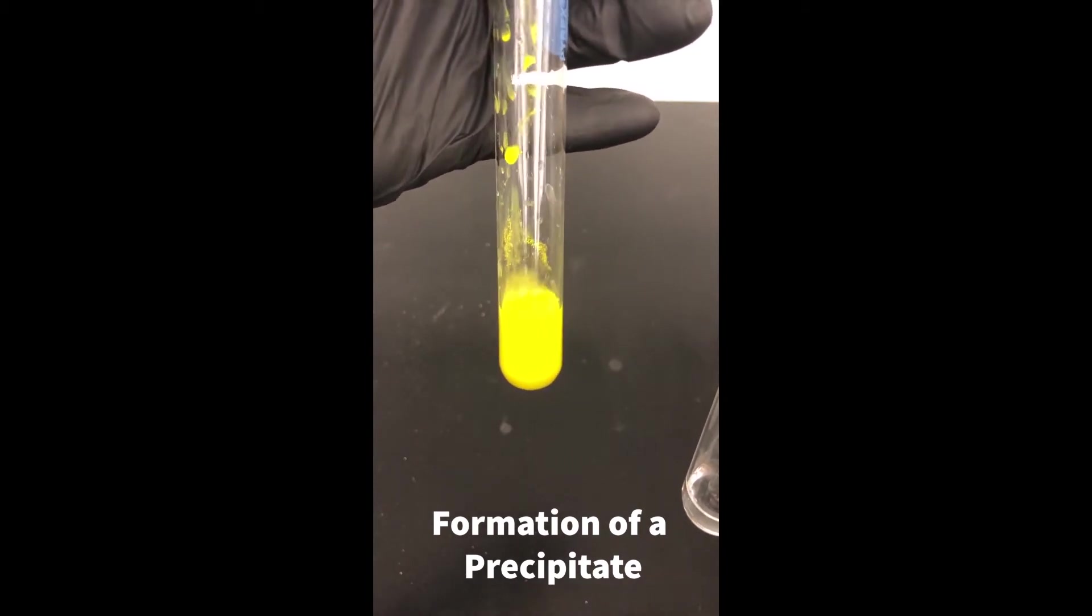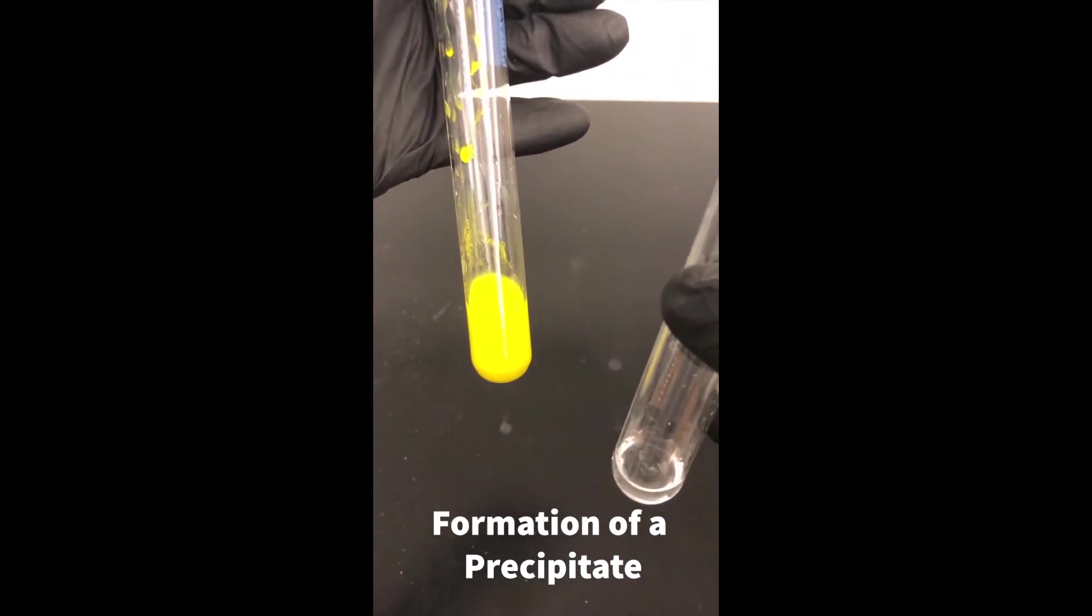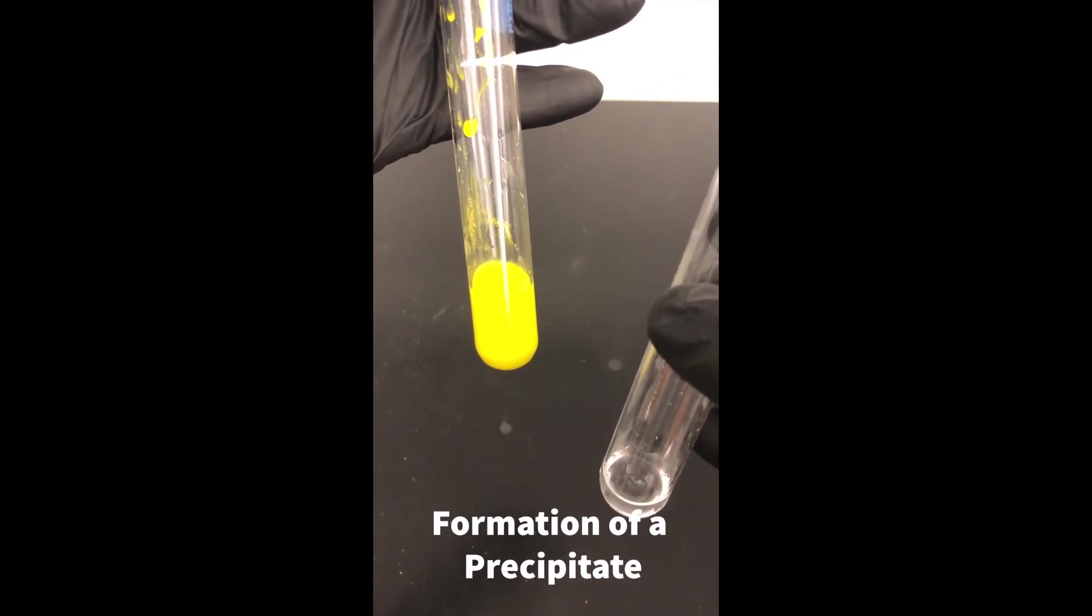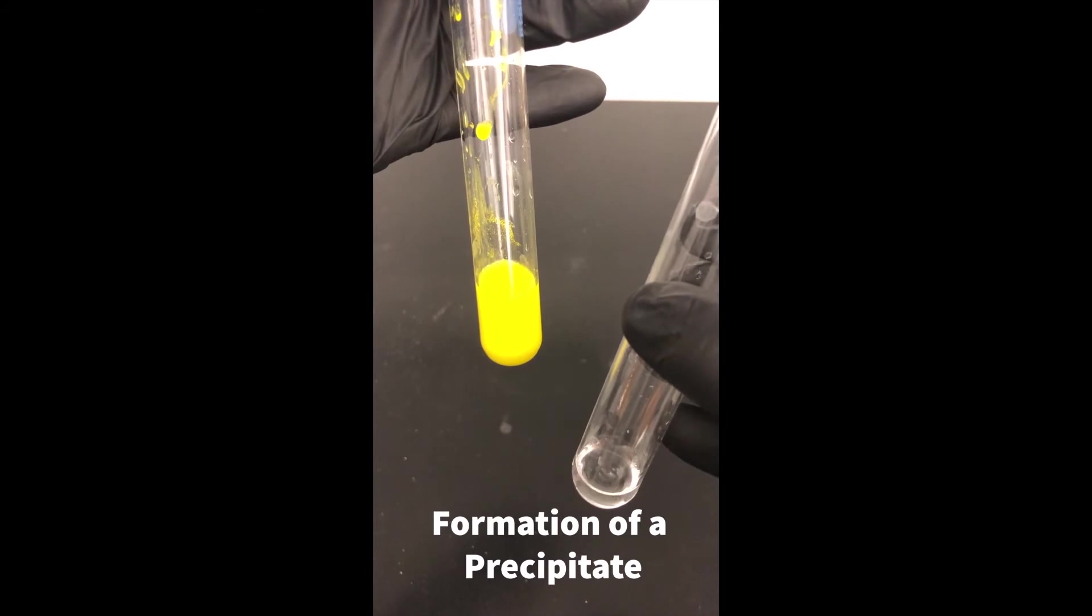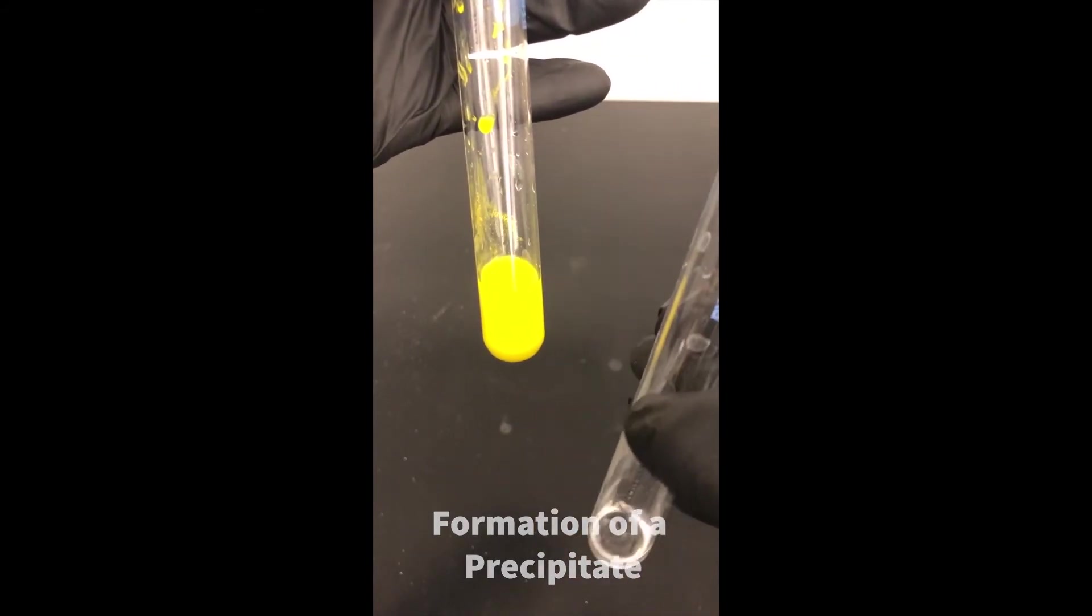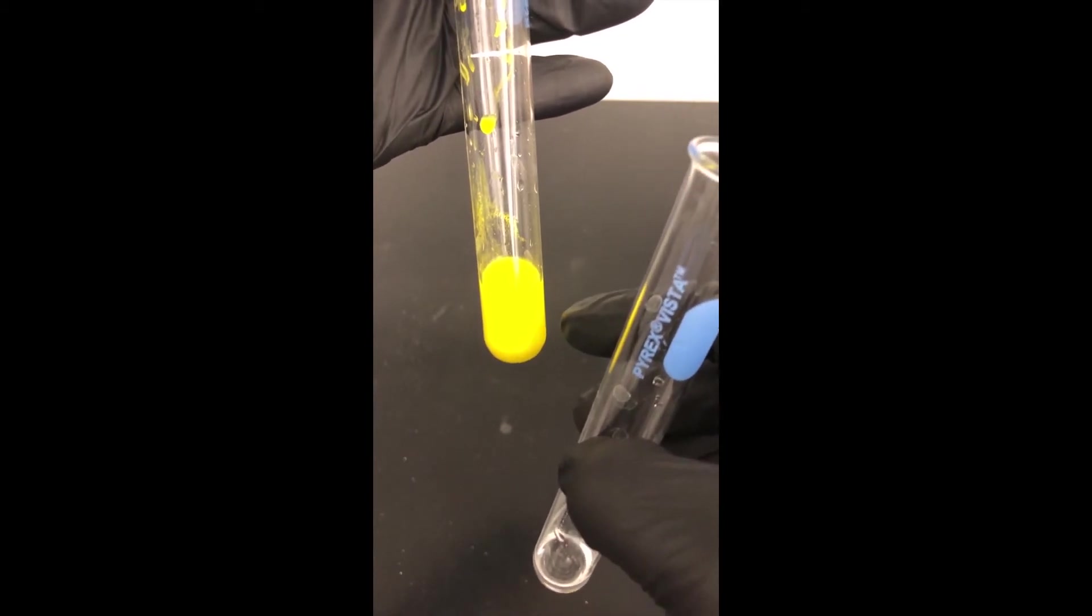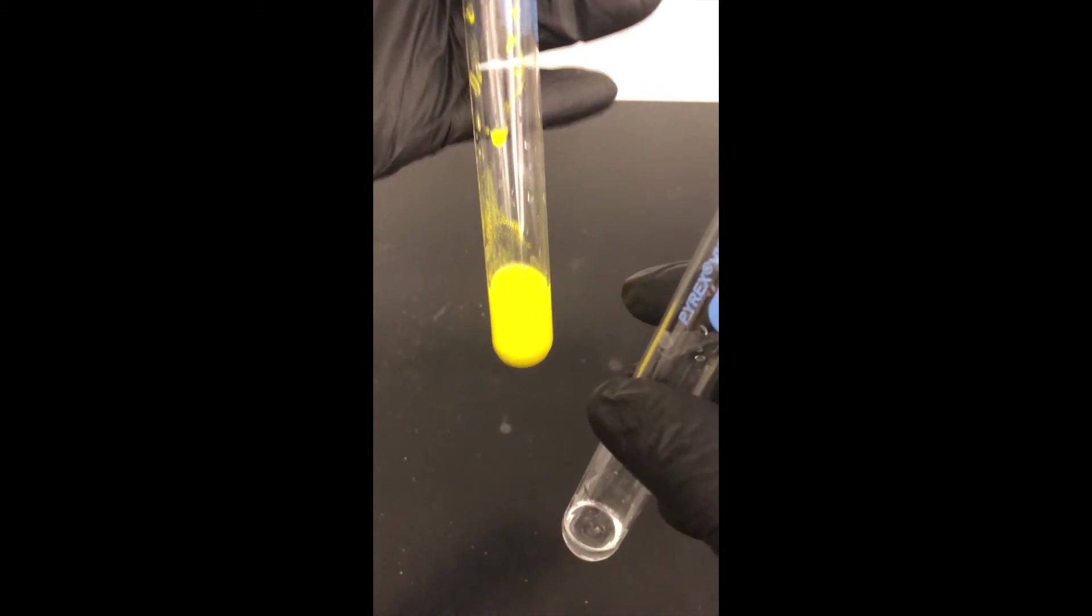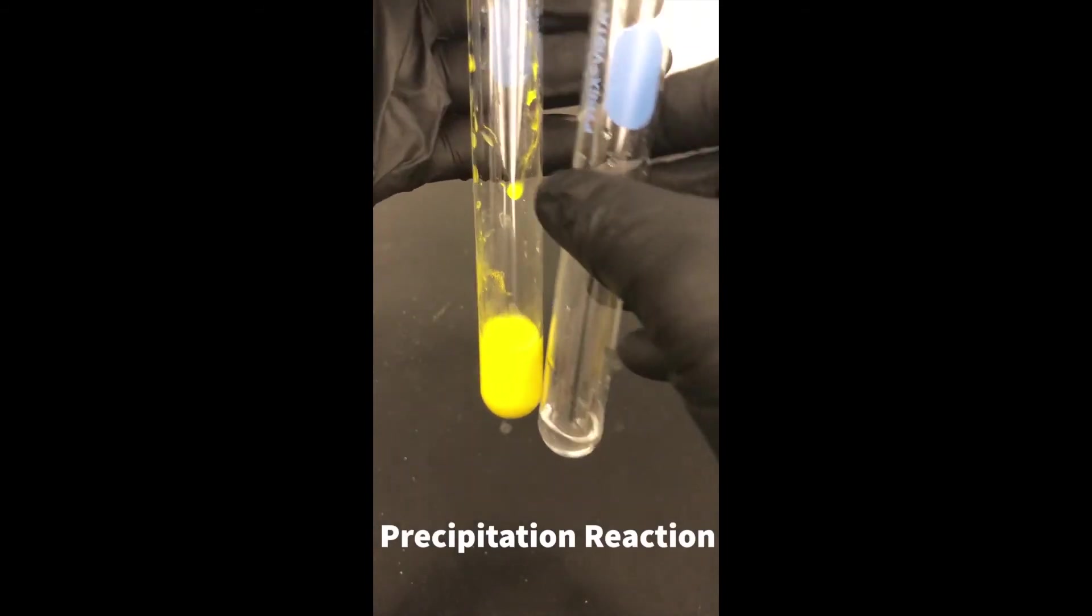—the yellow one—there's like a solid being formed. So not only was there a color change here, but actually what happened was that a solid was formed that was not there before. If we allowed this to settle for a little while, that solid will settle to the bottom and we'll see that it is a yellow solid. We call this a precipitation reaction, and it is another indicator of chemical reactions.